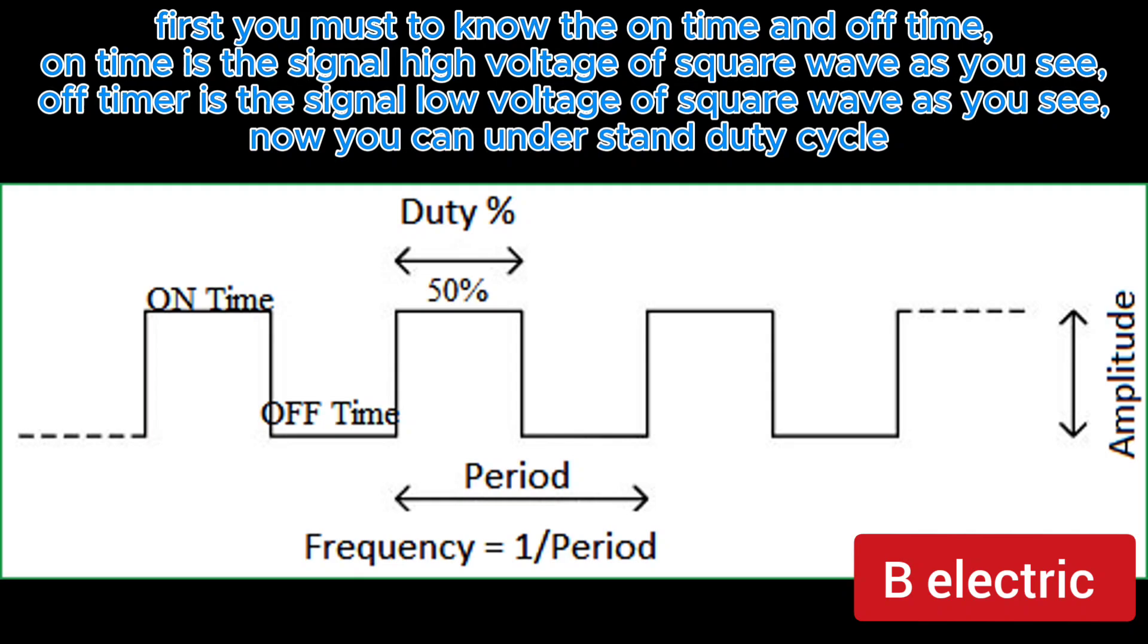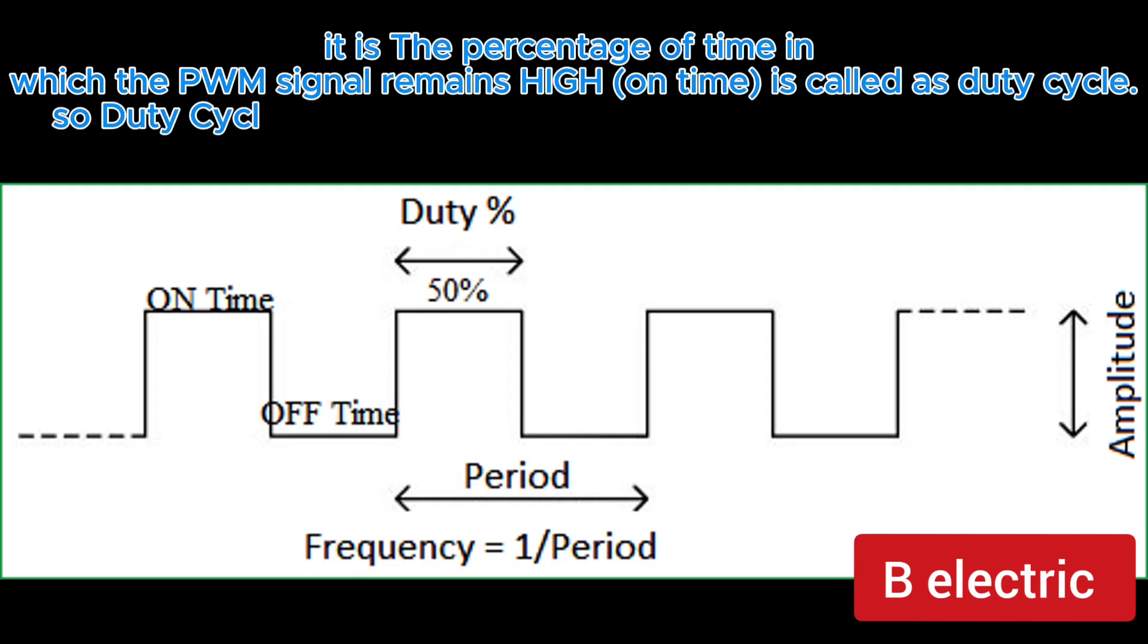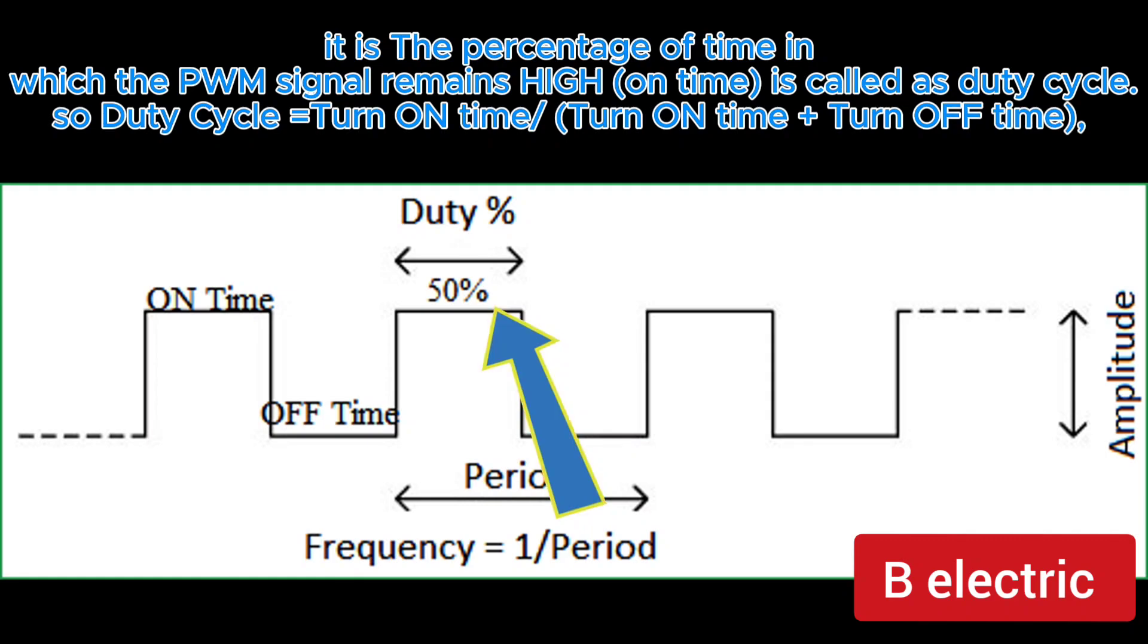Now you can understand duty cycle. It is the percentage of time in which the PWM signal remains high. On time is called as duty cycle. So duty cycle equals turn on time slash turn on time plus turn off time.